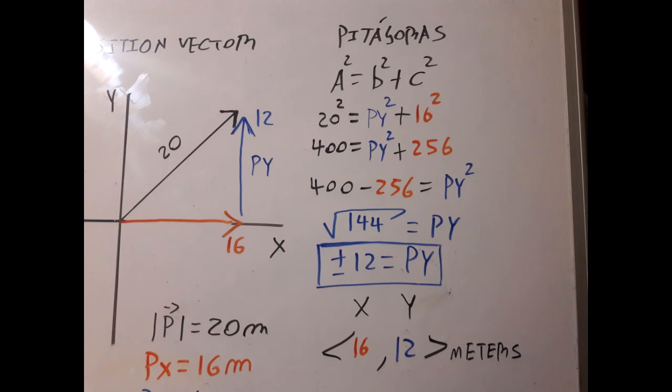Now we can see that we have both components of the vector. The x-component is 16, the y-component is 12, and the magnitude is 20.